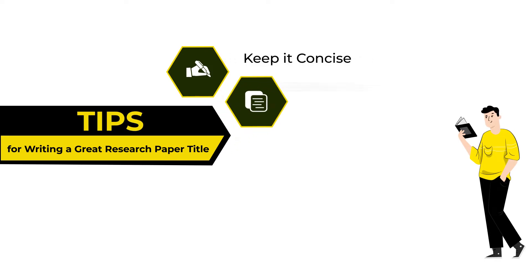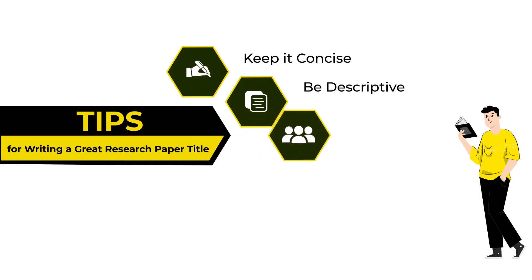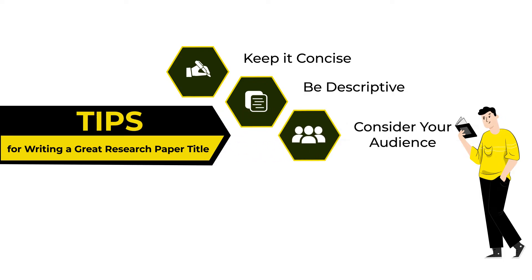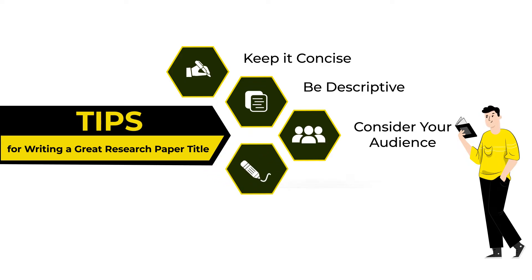Be descriptive — use keywords that accurately describe the main topic of your paper. Consider your audience — write a title that is appropriate for the tone and scope of your work and your target audience. Use active verbs — start your title with an active verb to make it more engaging and descriptive.